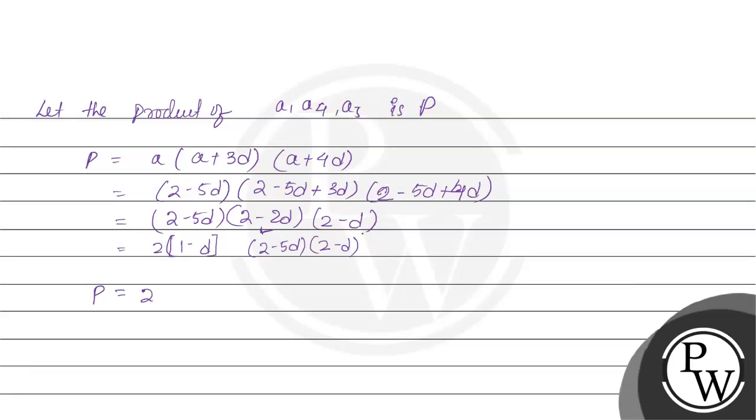So we can write this as 2 multiplied with minus 15 D cube plus 17 D square plus 16 D plus 4. We get this by multiplying all the terms. Let us find the maximum value of the product. If we differentiate P, then what we have is 2 multiplied with minus 15 D square plus 34 D minus 16. Let us equate this with 0.